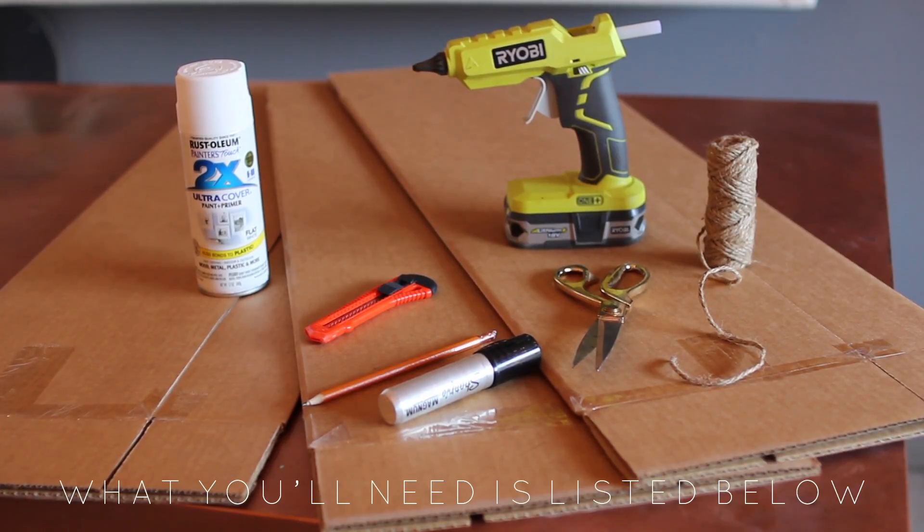So I gathered up some old cardboard boxes that I had, white spray paint, hot glue, an exacto knife, a pencil, some rope, and scissors.